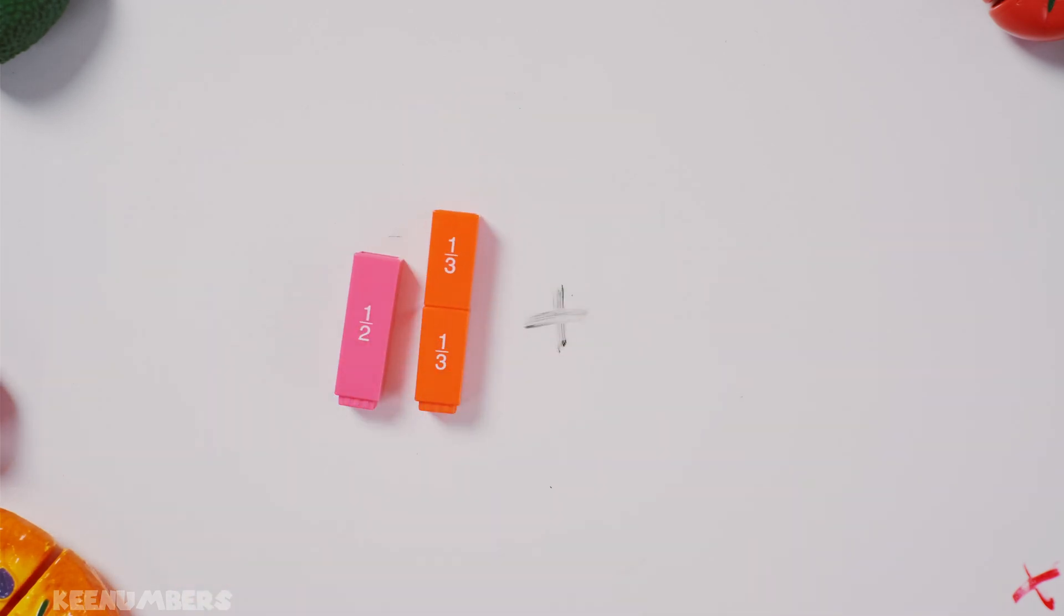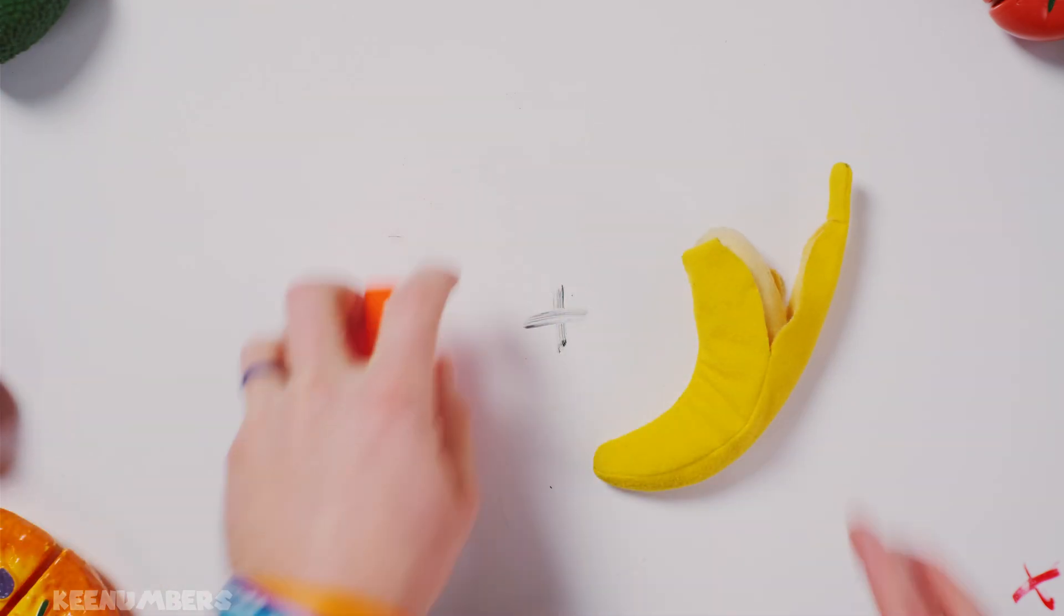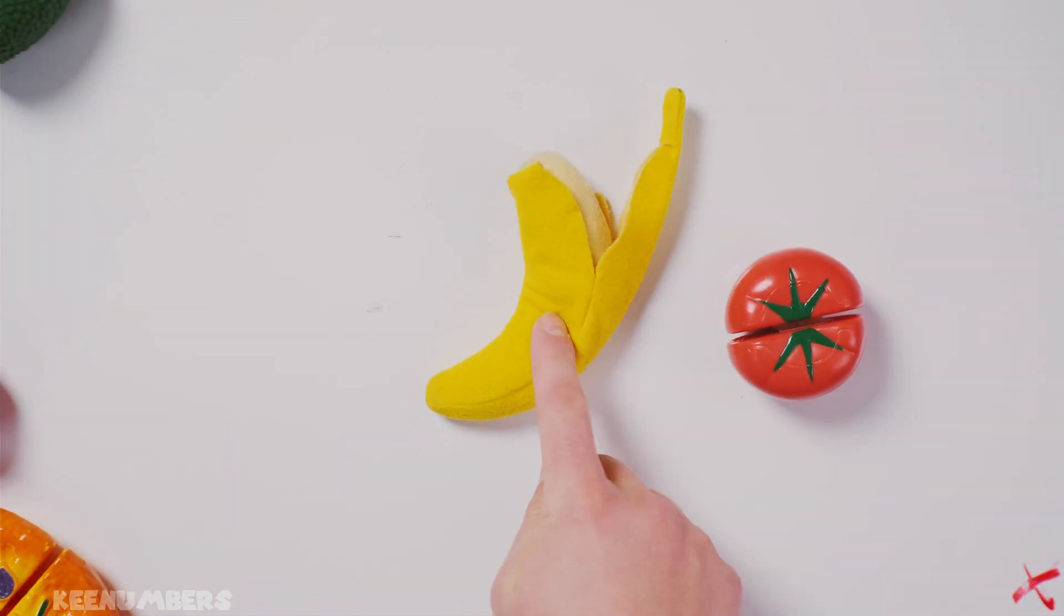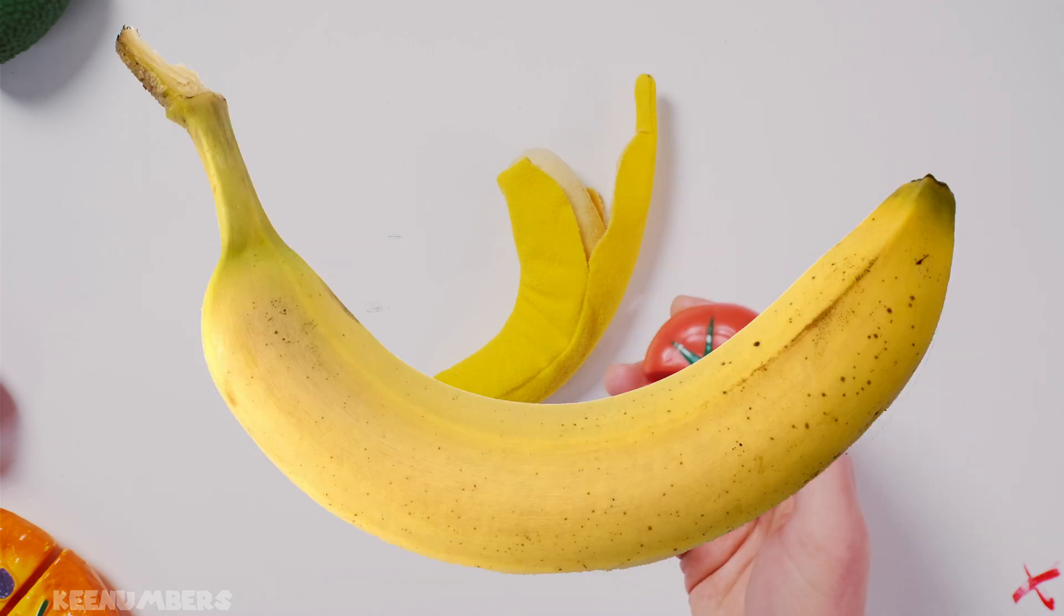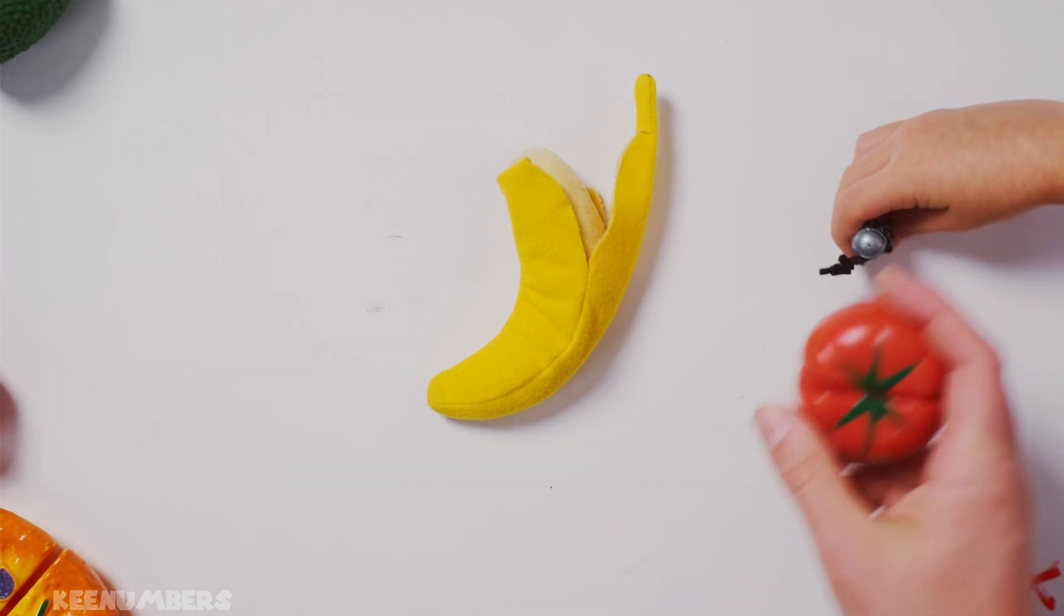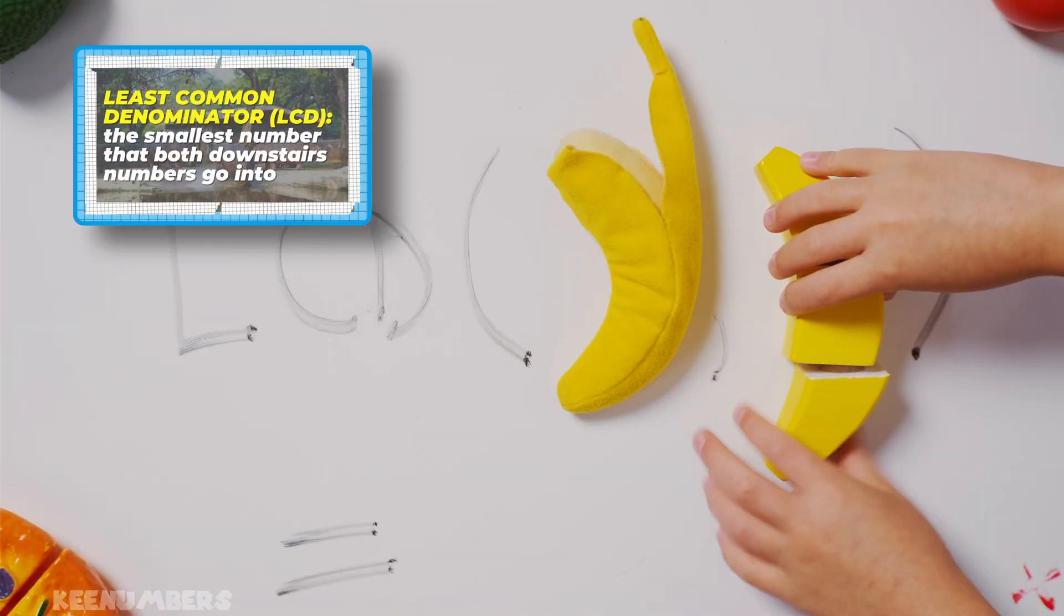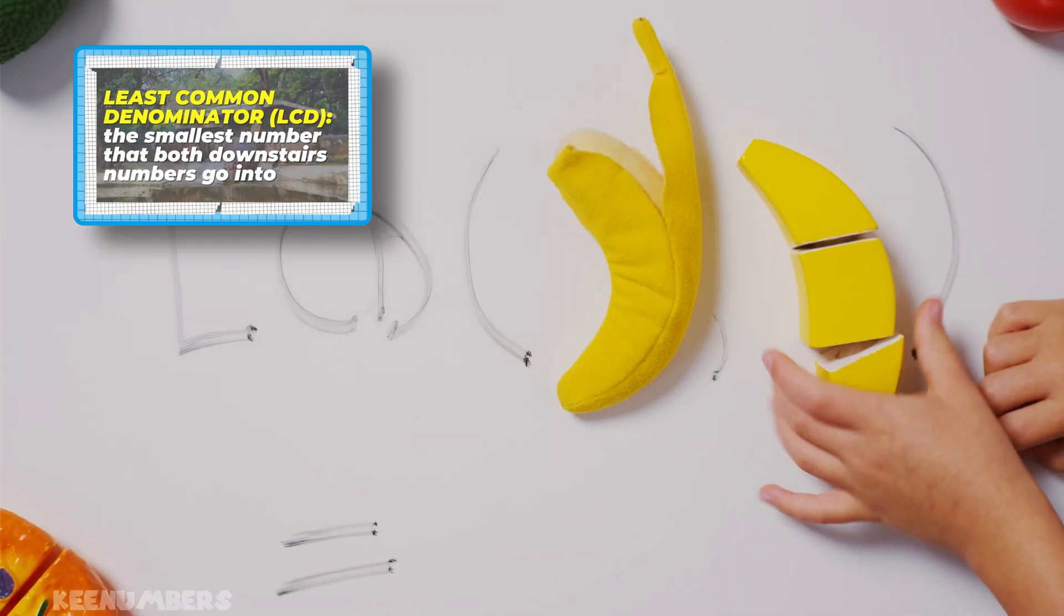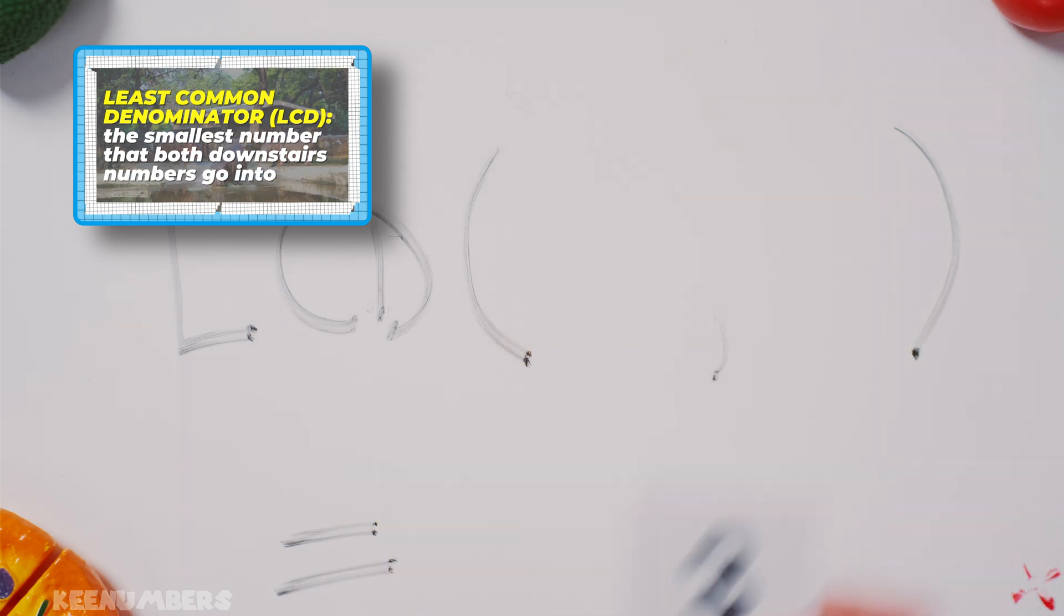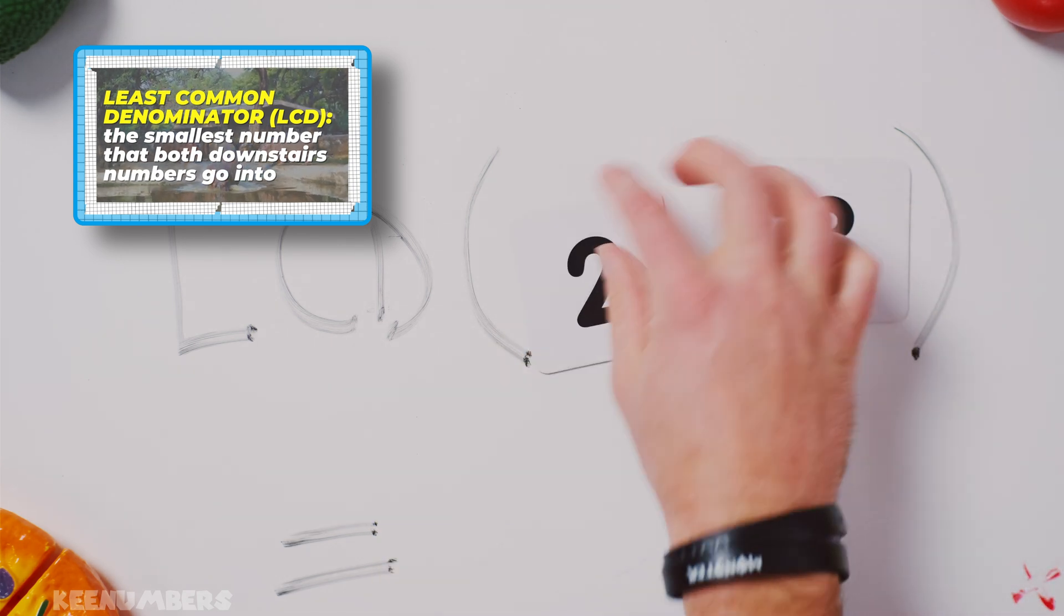That's like trying to add bananas and tomatoes. You can't do it. A banana is not a tomato. And a tomato is not a banana. The least common denominator of banana and banana is banana. The least common denominator of 3 and 2, you may recall, it's 6.